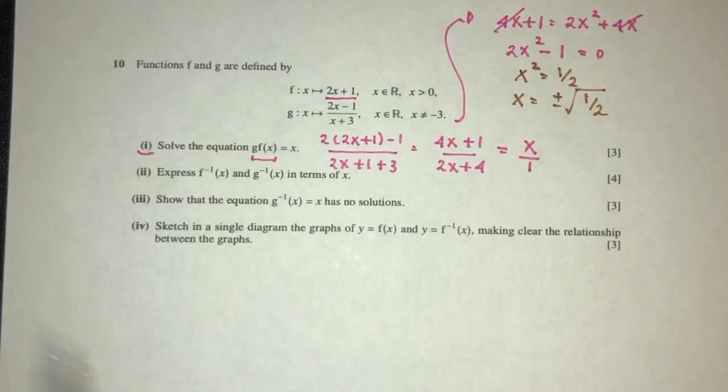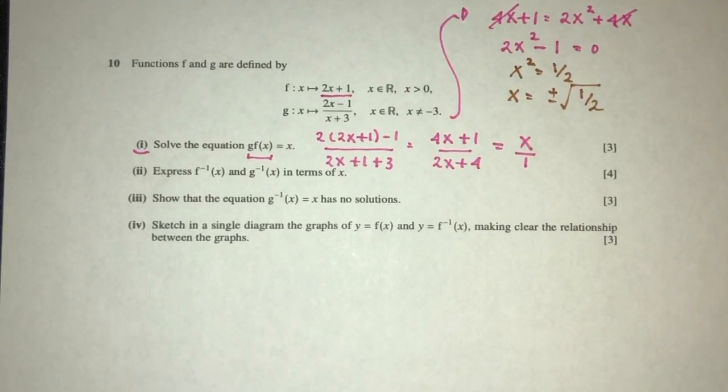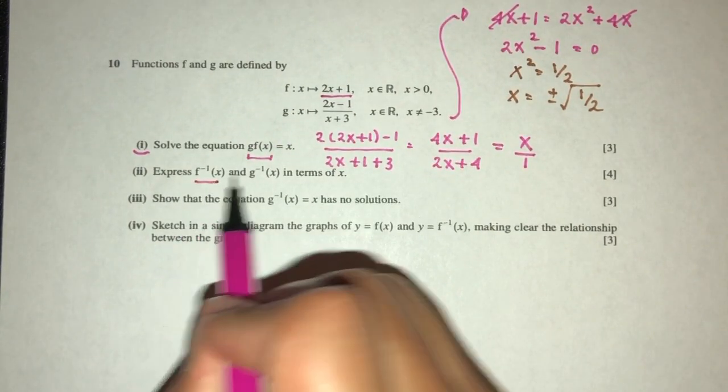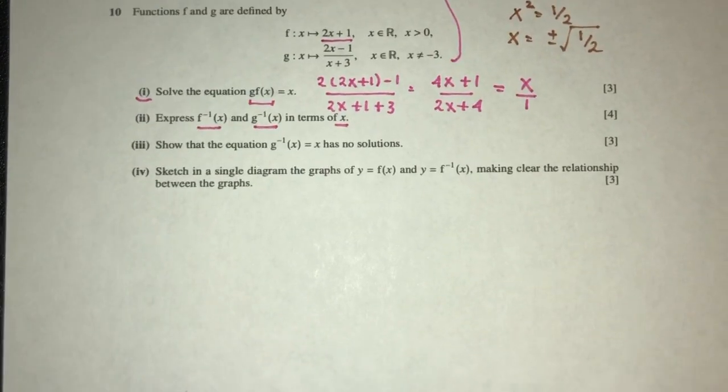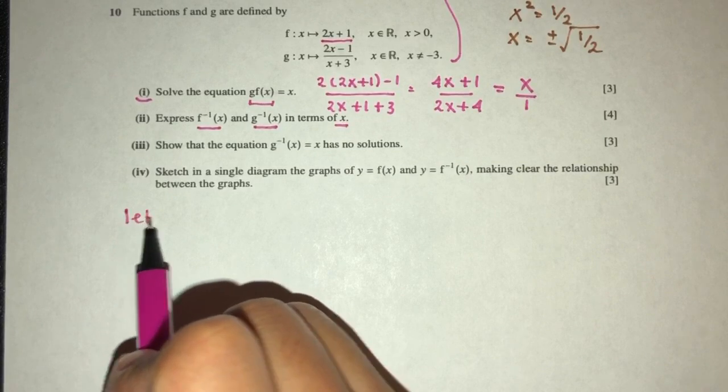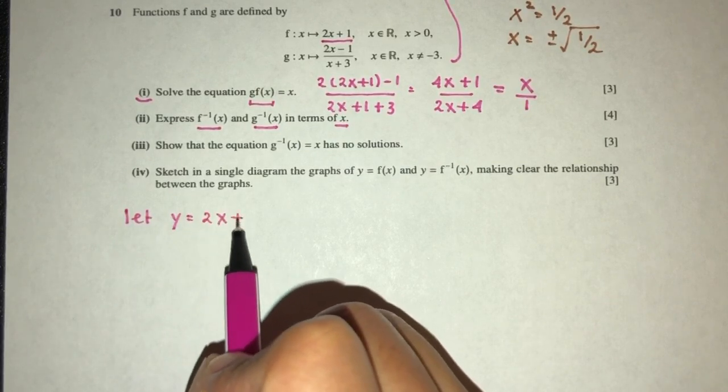Now let's move on to part two. We have to express f inverse of x, g inverse of x in terms of x, so pretty easy, one by one. So first thing first, let y equal to f of x, which is this.